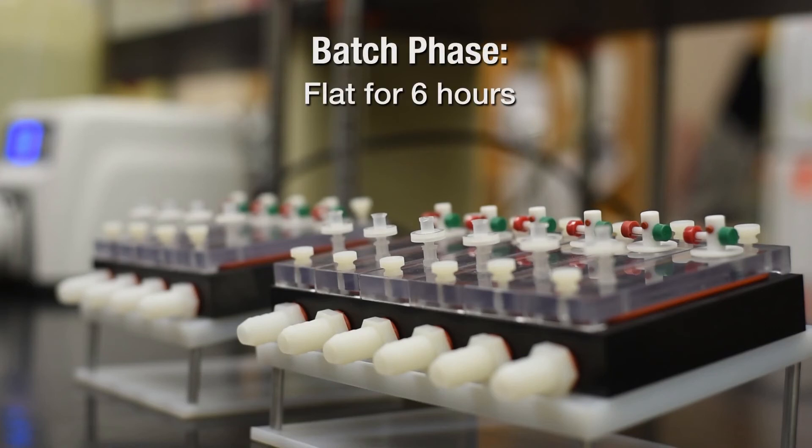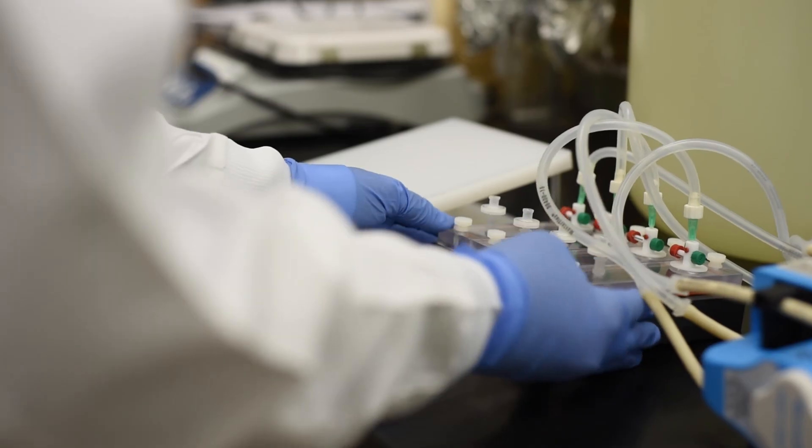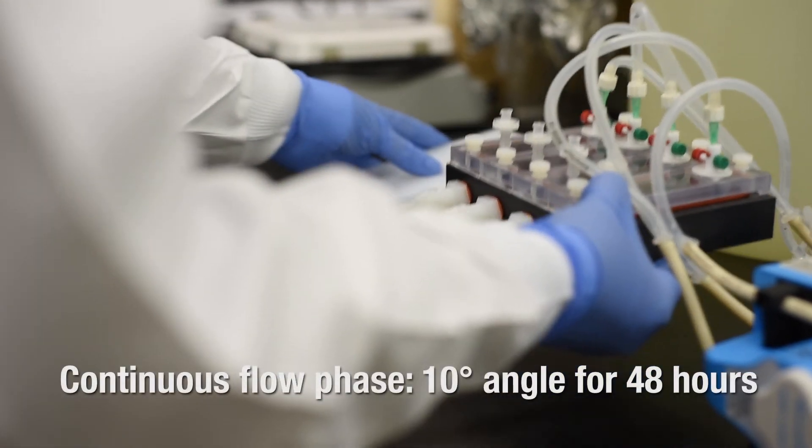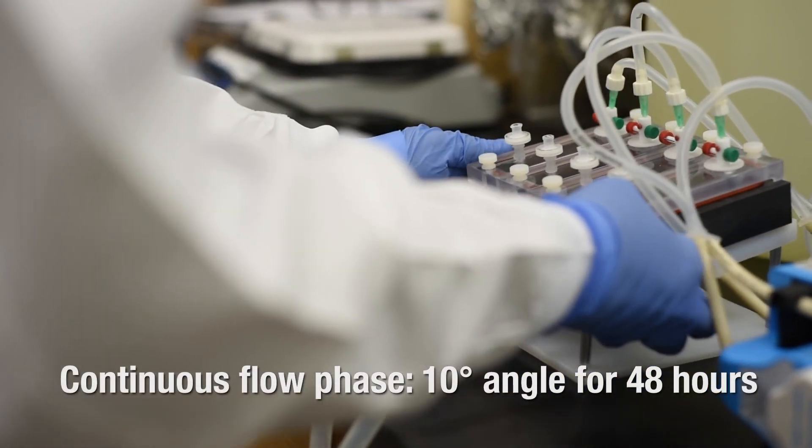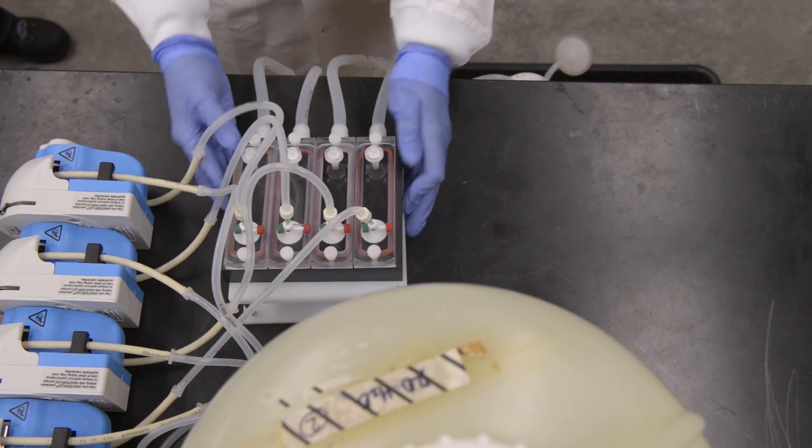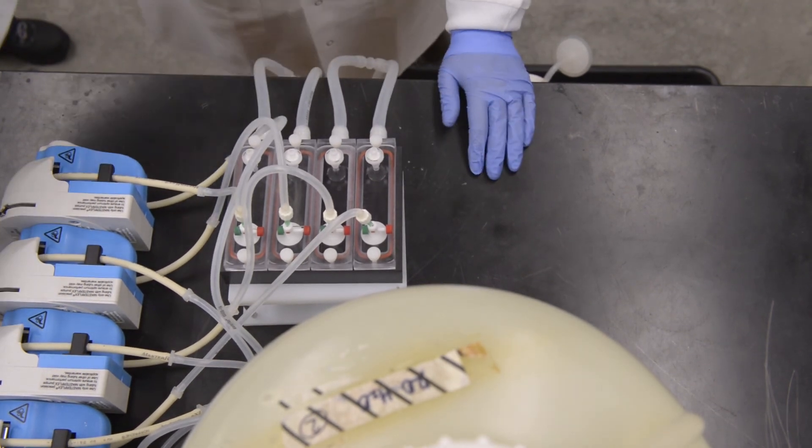For the batch phase, the reactor is incubated flat for six hours. During the continuous flow phase, the reactor is placed at a 10-degree angle and media is pumped into the influent port. The media flows down over the slide coupon and out the effluent port.